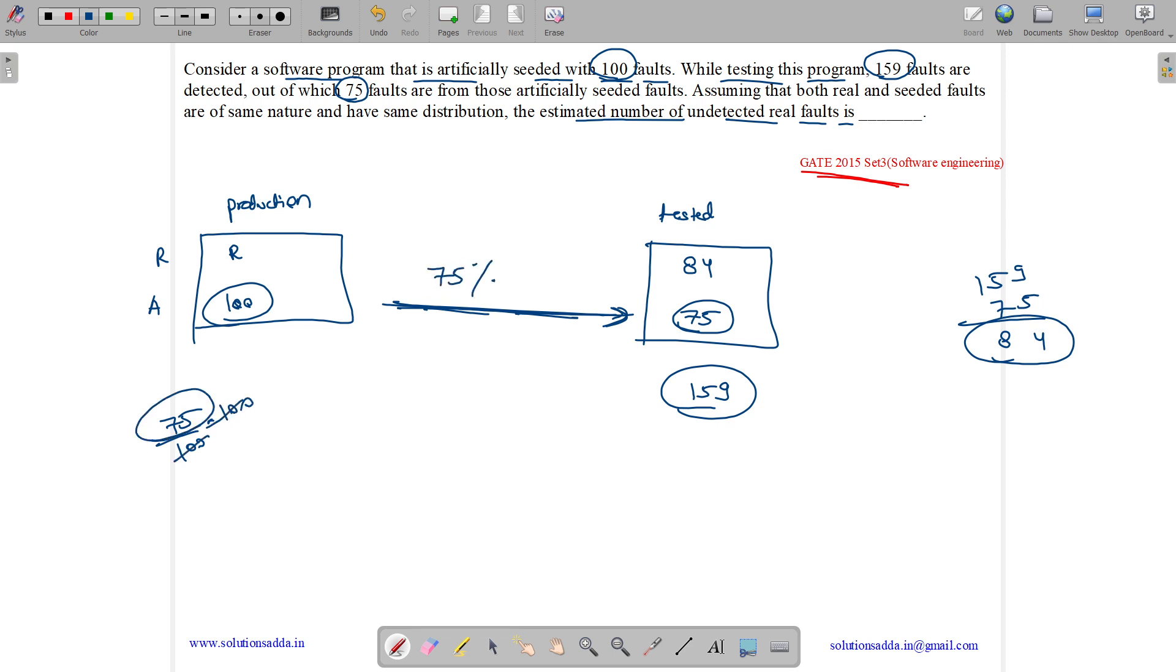So 75 percent faults are identified, which means 75 percent of R, 75 percent of the total real faults, will be our 84. So R is 84 into 100 divided by 75, which is 112.